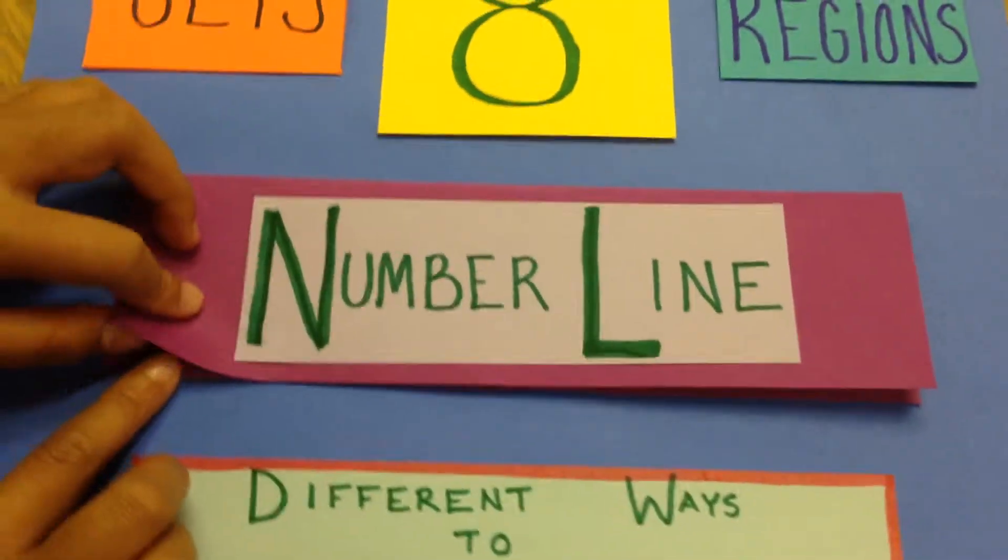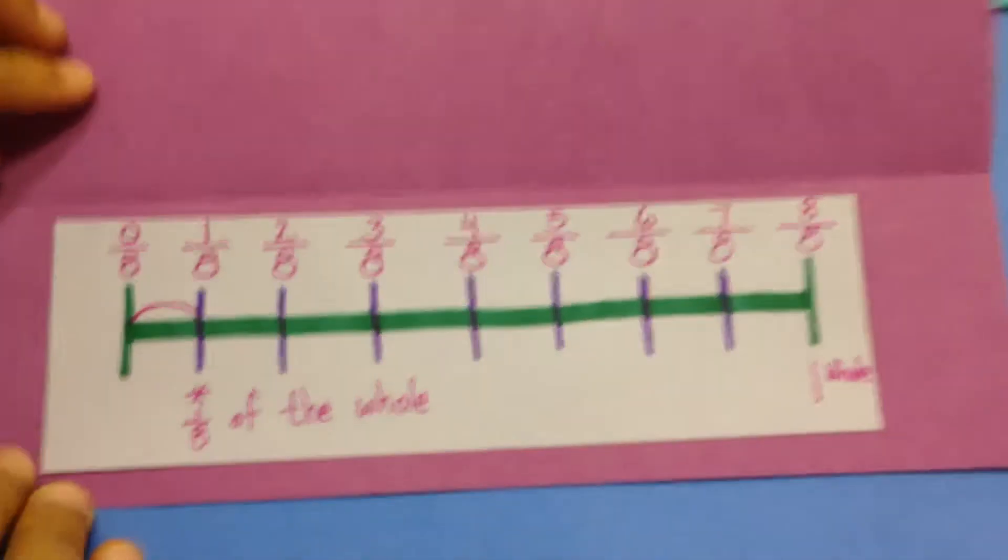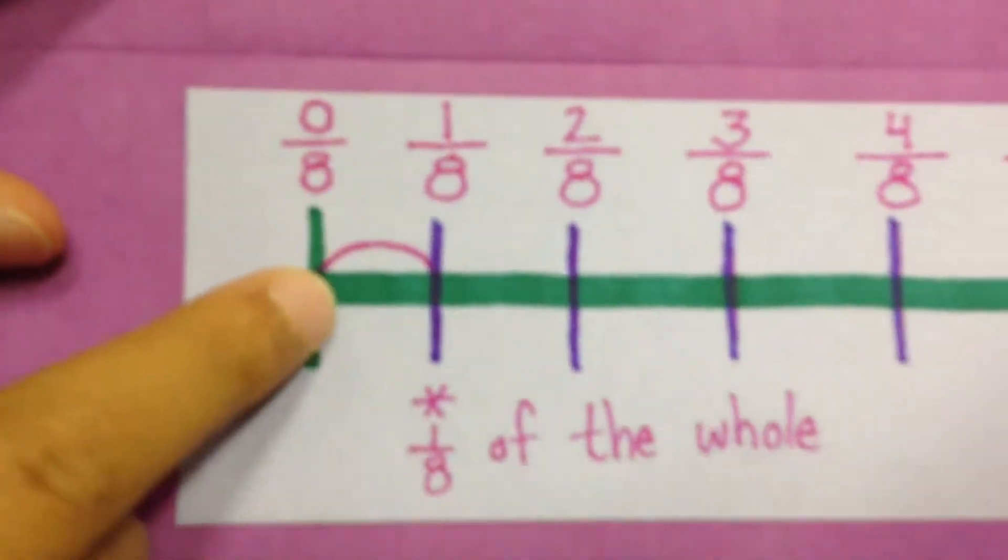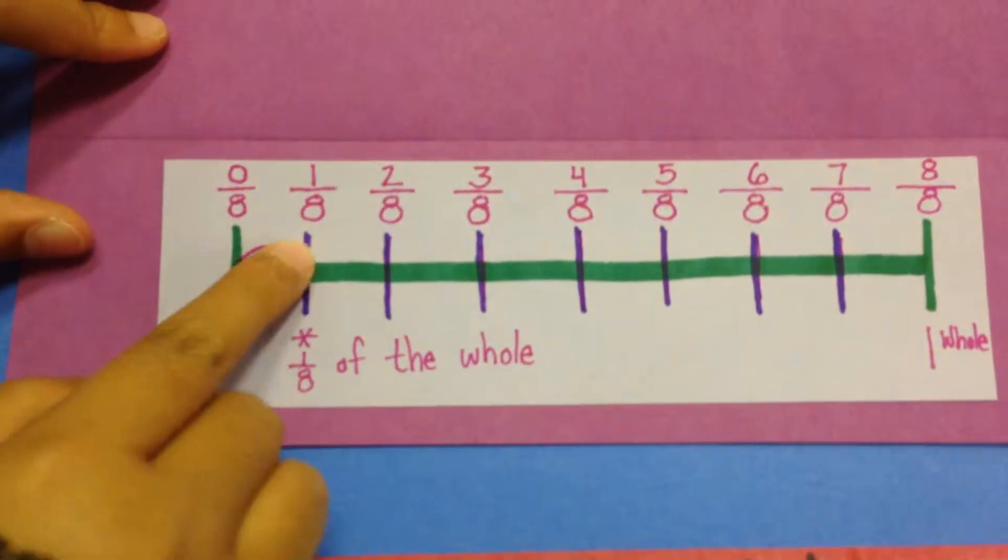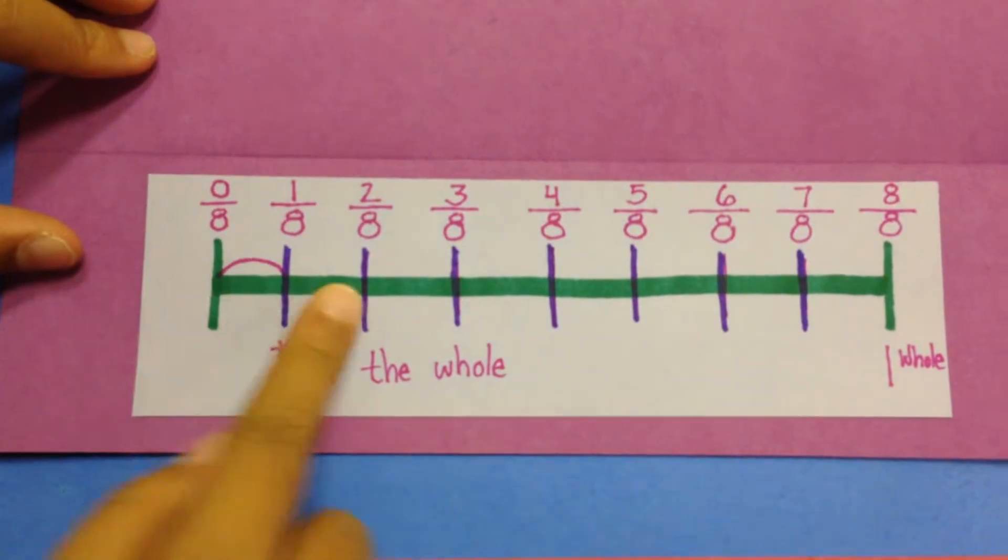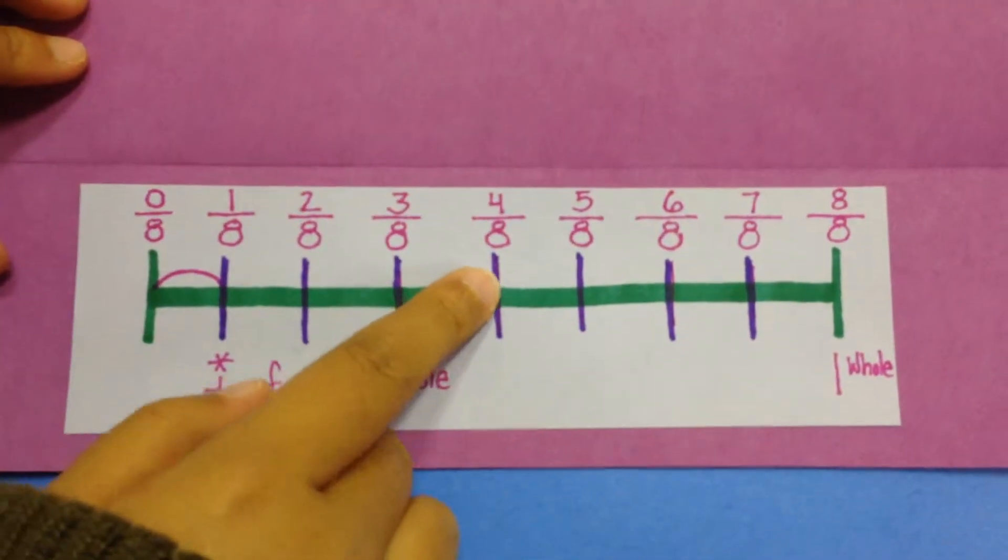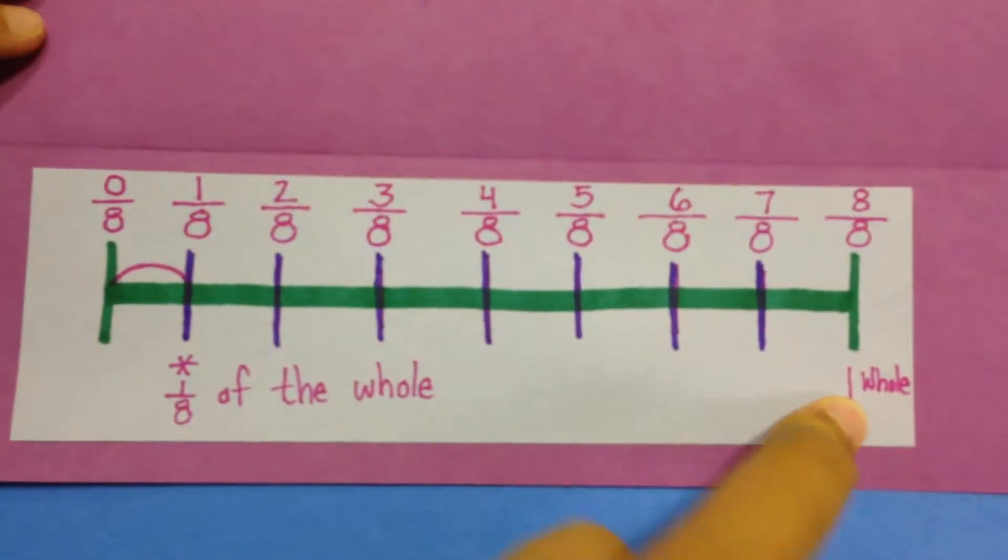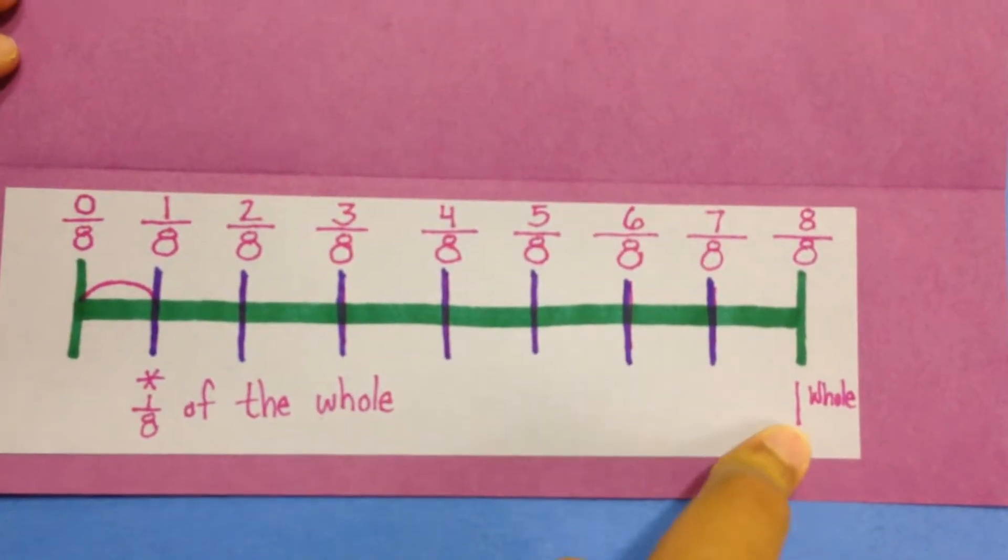Here is the number line of one eighth. You see that there is one eighth connected to zero eighths. This is the half of one whole. Eight eighths equals one whole.